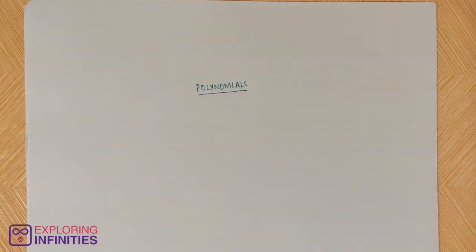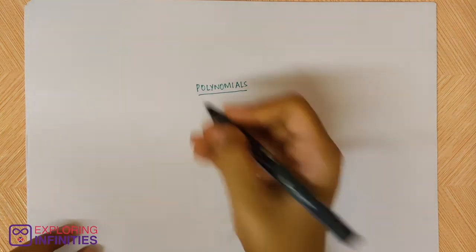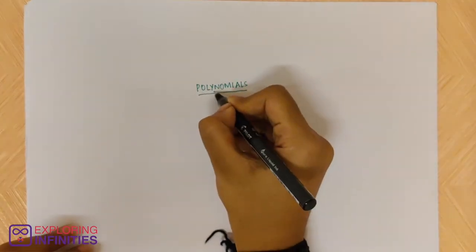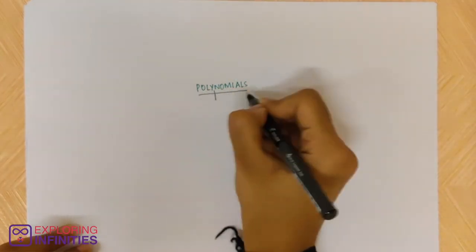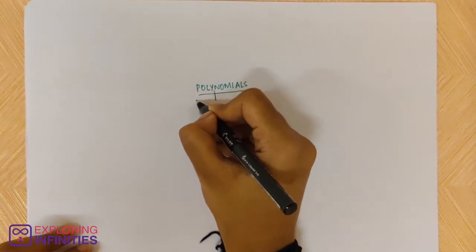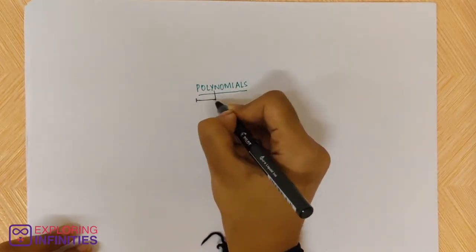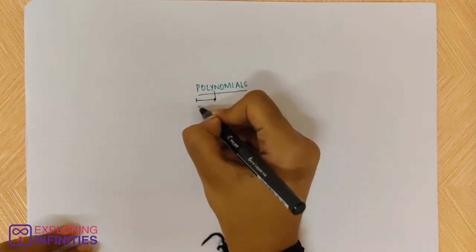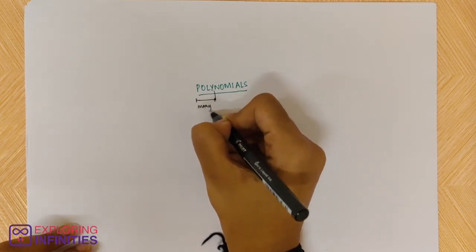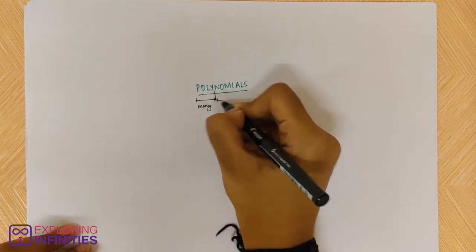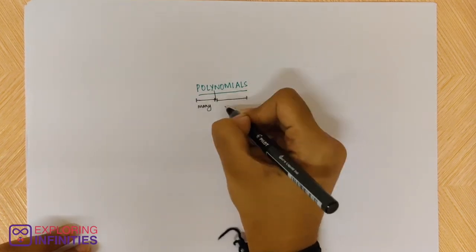In a simple way, if you want to see what polynomials are, you would divide the word into two parts: poly and nomials. So poly — what does poly mean? Poly means many. And nomials means terms.